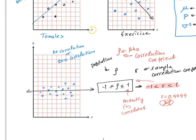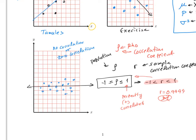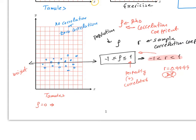Something very important: if the correlation equals zero — for example between tamales and weight — you can automatically say that x doesn't cause y, and that x is not related to y.